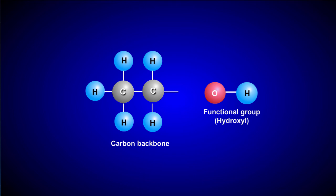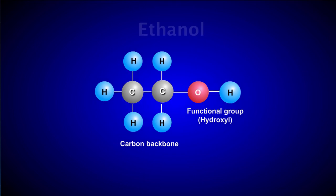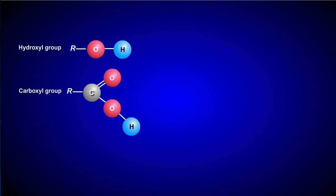The functional group shown here is a hydroxyl group, and when it attaches to this carbon skeleton, the compound ethanol is formed. There are many different types of functional groups in biology. The five that you will probably come in contact with the most are the hydroxyl group, the carboxyl group, the amino group, the sulfhydryl group, and the phosphate group.